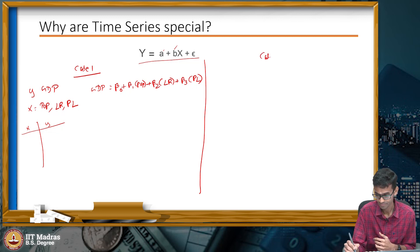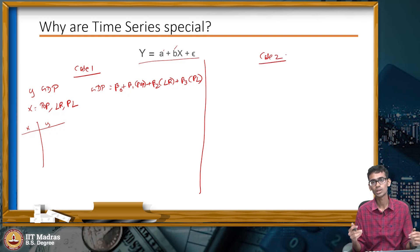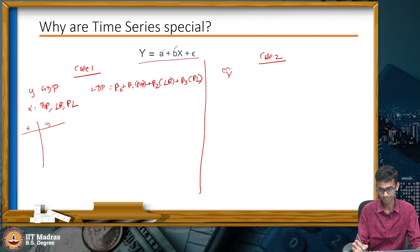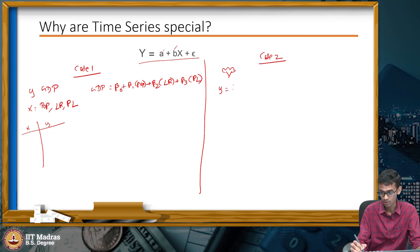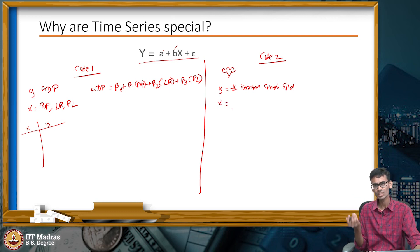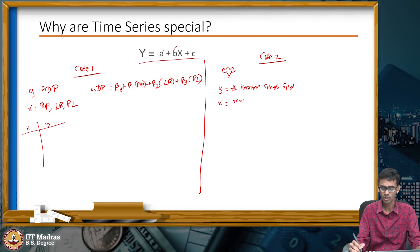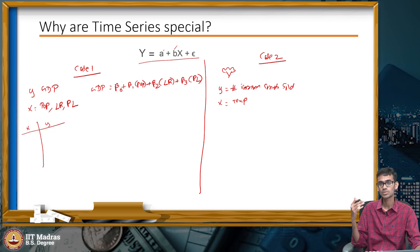Now let's consider another case. Say you own an ice cream parlor and you want to build a model that predicts the number of ice cream cones you will sell on any given day. Here, y is the number of ice cream cones sold, and you use temperature as your independent variable. Your hypothesis is that if temperature is high, sales will be high; if temperature is low, sales will also be low.